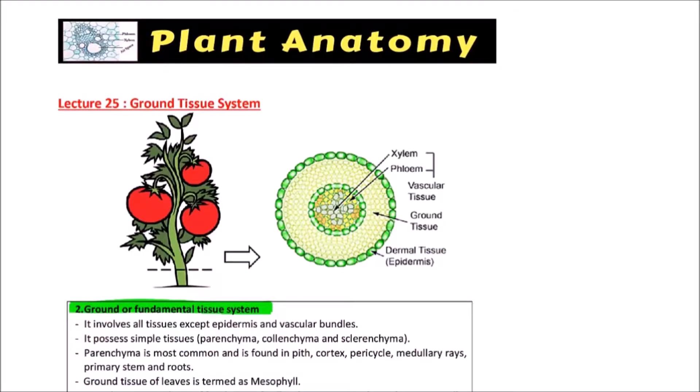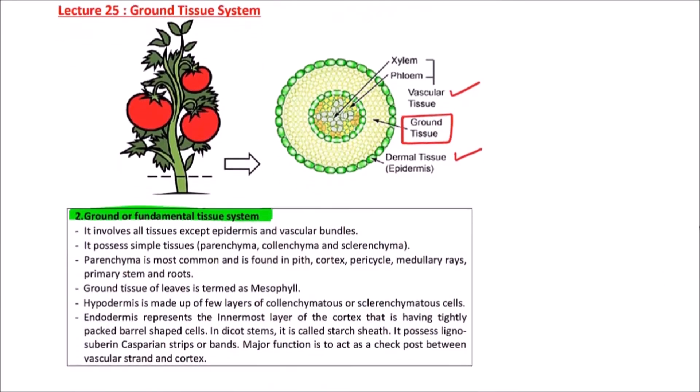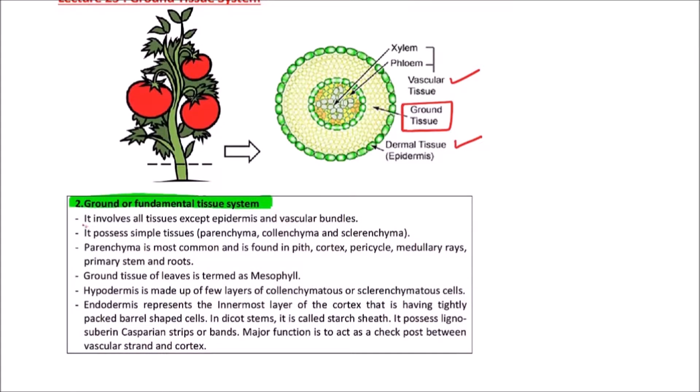Welcome to Studio Biology. In this video, I am going to discuss the ground tissue system. Ground tissue system is located between the epidermal tissue system and the vascular tissue system. It involves all the tissues except epidermis and vascular bundles.